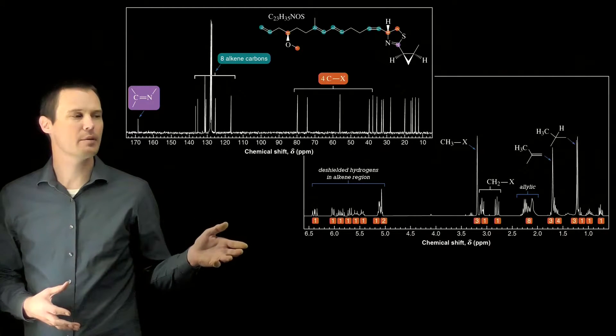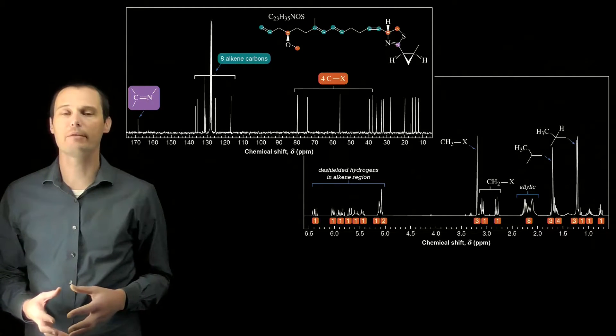This assessment asks us how we know from the proton NMR spectrum that cuirassin A does not have a benzene ring.